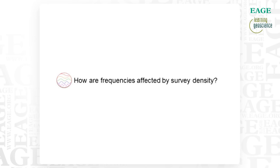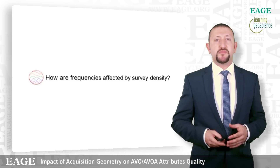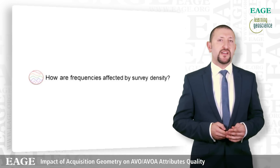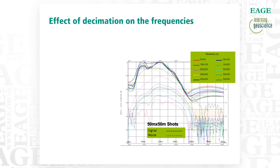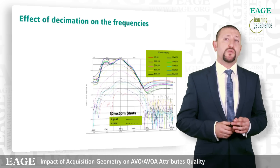Often when we talk about resolution, frequencies are the parameters we blame. So let's see how frequencies are actually affected by survey density. Here we're looking at 10 different frequency spectra of 10 different receiver decimations from the 50 by 50 meter shot. The continuous line represents the signal and the dotted line represents the noise. Those different colors represent the different decimations listed in the green square on the top right corner. The first thing we observe is that the frequency spectra of the signal all seem to overlap, telling us that survey density doesn't really change the frequency content of your dataset.